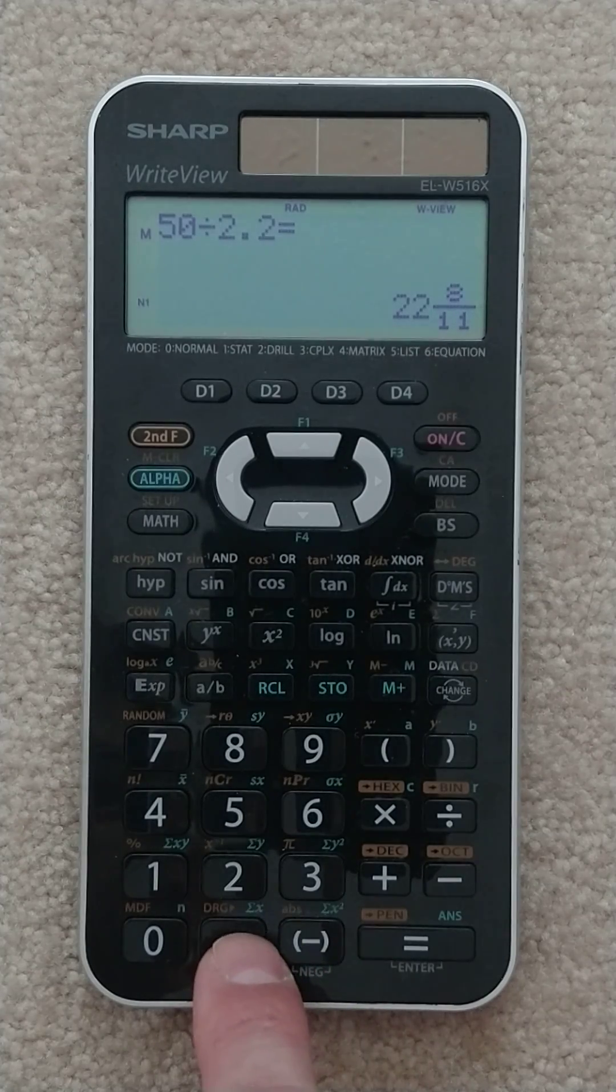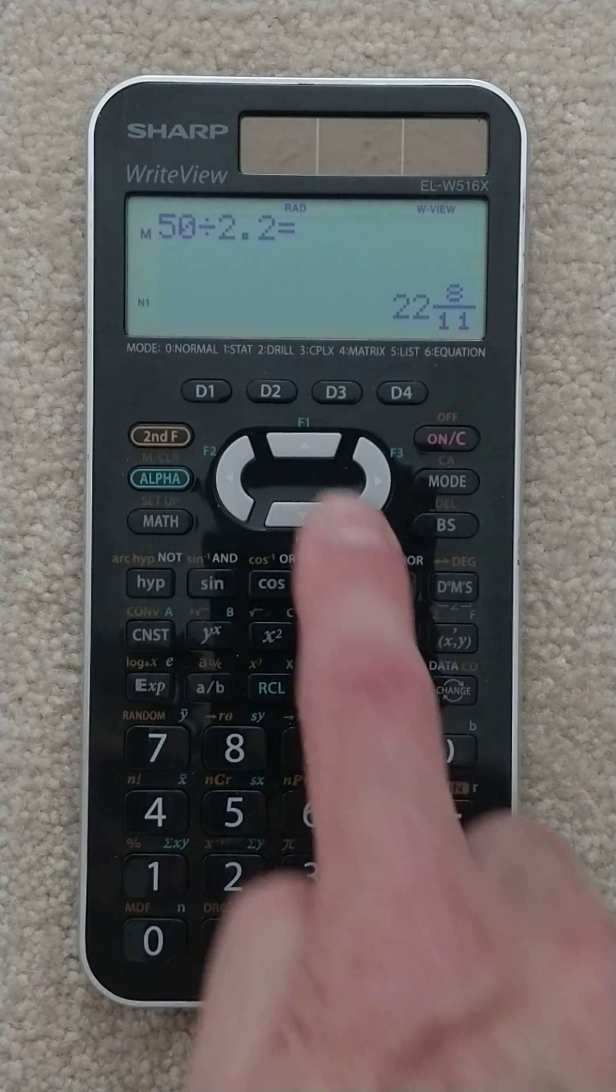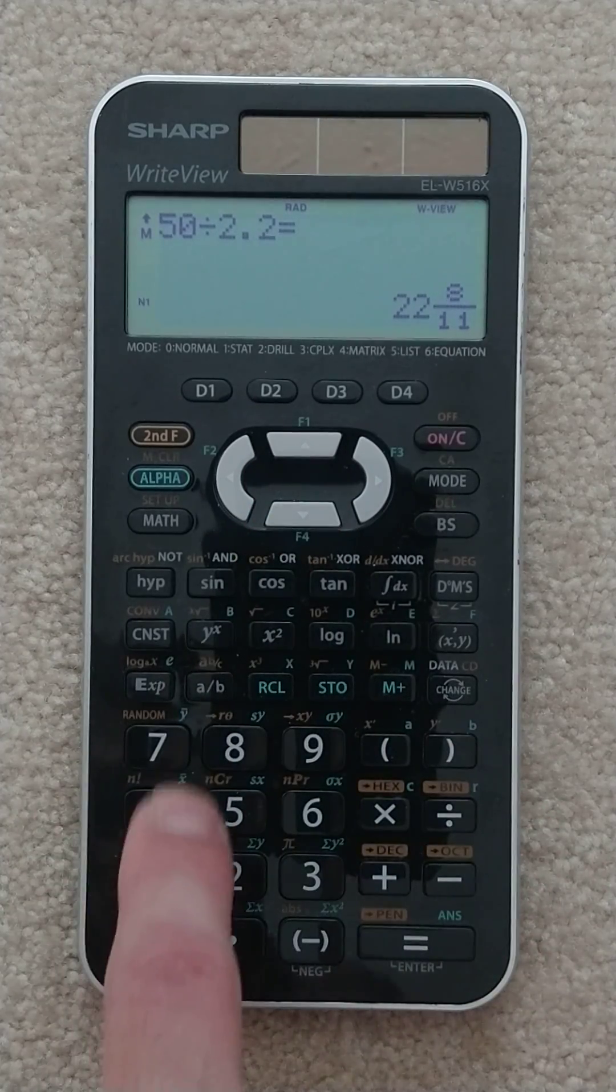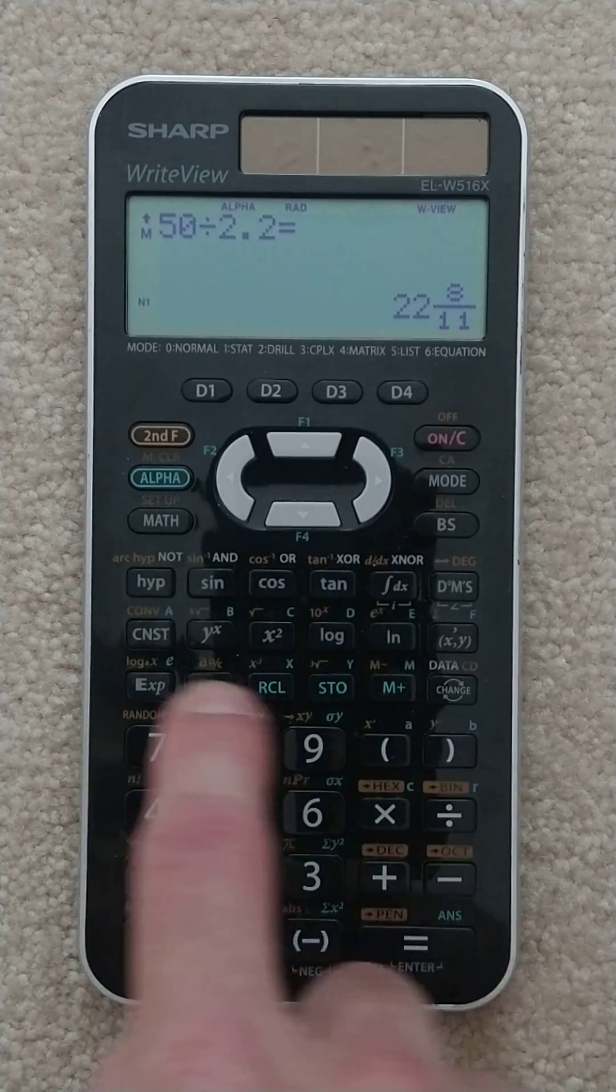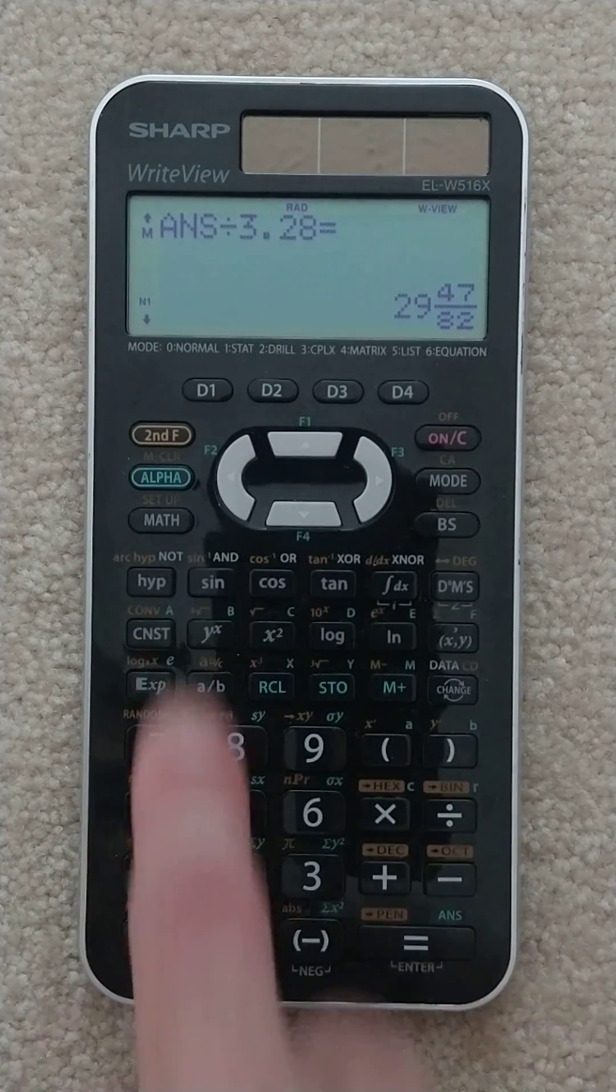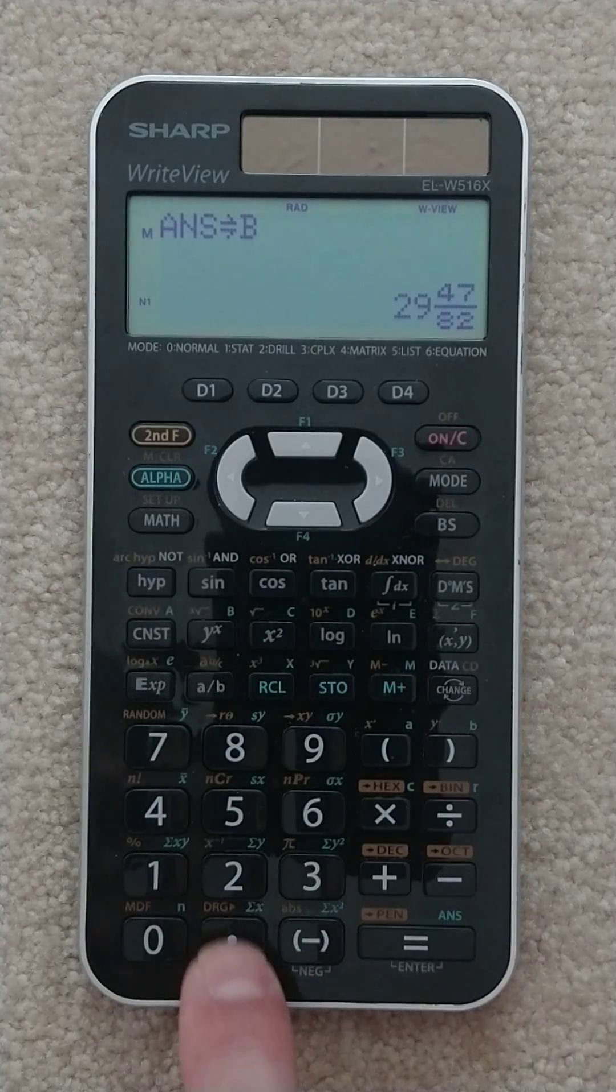And now we go to do our calculation and realize we forgot to store those values. There's no easy way to reuse them like on the TI. But I can go up and say, let's just start with this. This is my mass. I'm going to store that. So hit the store, put it in A. Then I'm going to go up and grab my velocity, and I'm going to store that in B. So now I have those two values.